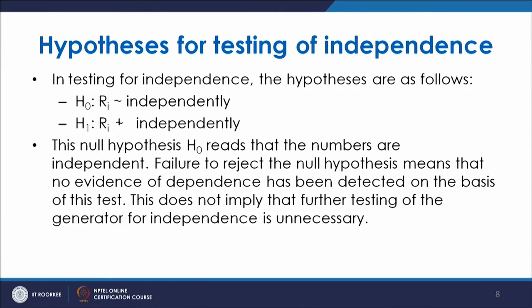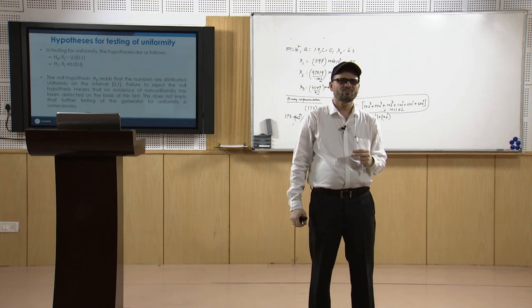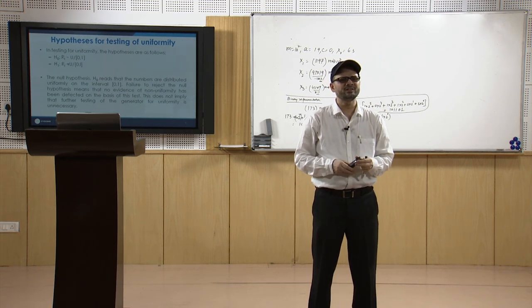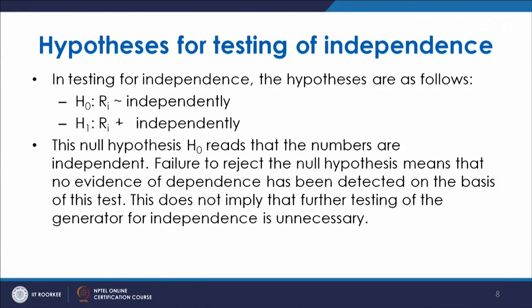Similarly, there is a hypothesis for testing independence. The null hypothesis H₀ reads that the numbers are independent. Failure to reject the null hypothesis means that no evidence of non-independence has been detected on the basis of the test. This does not imply that further testing for independence is unnecessary.